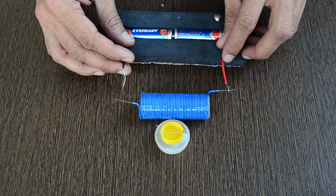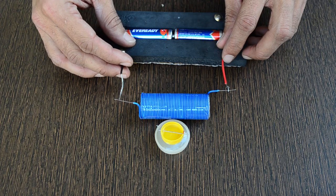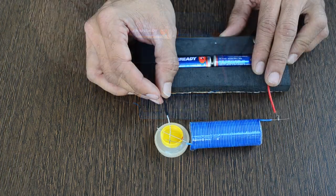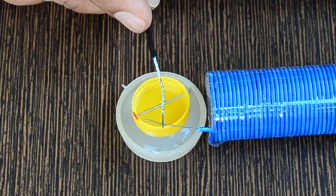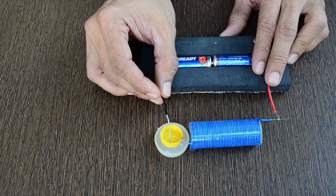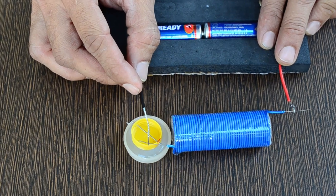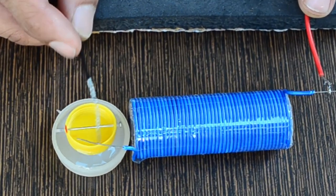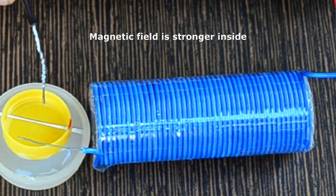If I place the needle compass outside the solenoid, nothing happens. Same compass if placed near one end of the solenoid, the needle is deflected. The magnetic field is formed inside the coil. Let us find out more about it.